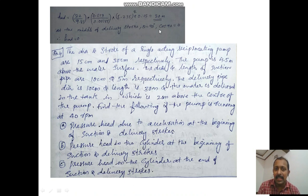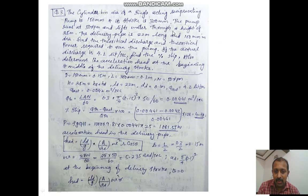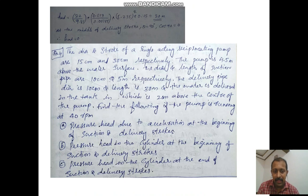At the middle of the delivery stroke, theta is 90, so cos 90 is zero. Substituting here, cos 90 is zero, so zero times this term equals zero. Therefore, h_a_d will be zero. Thank you.